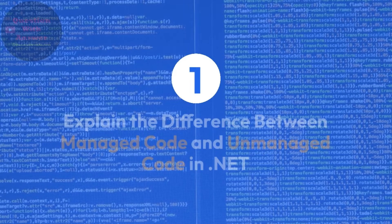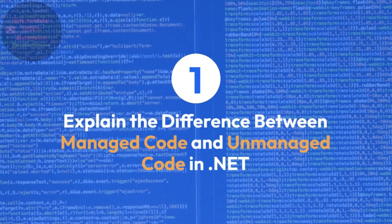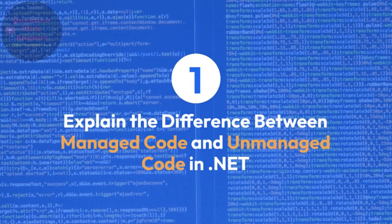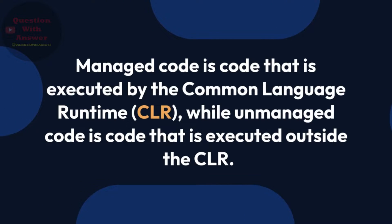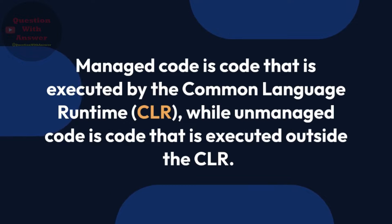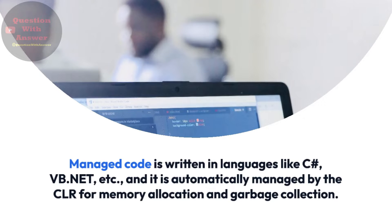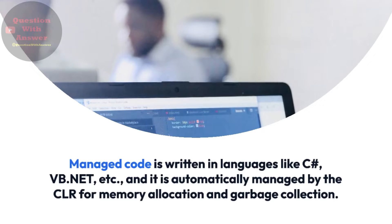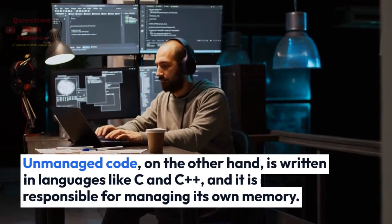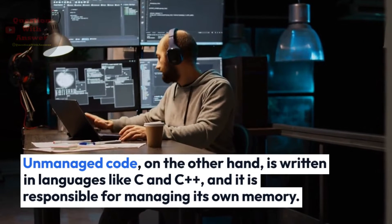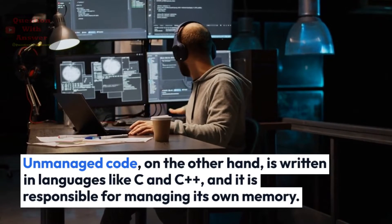Question 1: Explain the difference between managed code and unmanaged code in .NET. Answer: Managed code is code that is executed by the Common Language Runtime, or CLR, while unmanaged code is code executed outside the CLR. Managed code is written in languages like C# and VB.NET, and is automatically managed by the CLR for memory allocation and garbage collection. Unmanaged code, on the other hand, is written in languages like C and C++, and is responsible for managing its own memory.